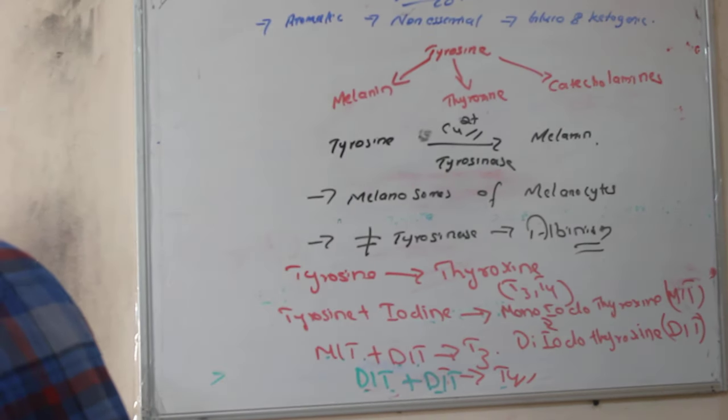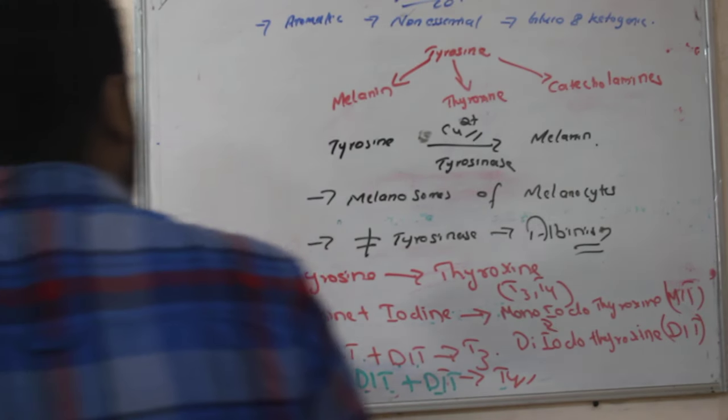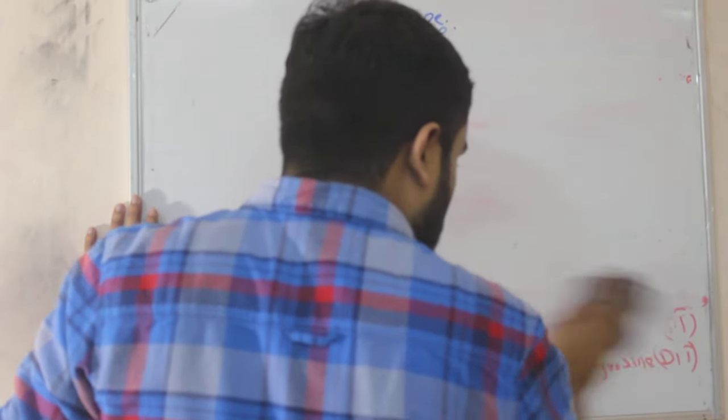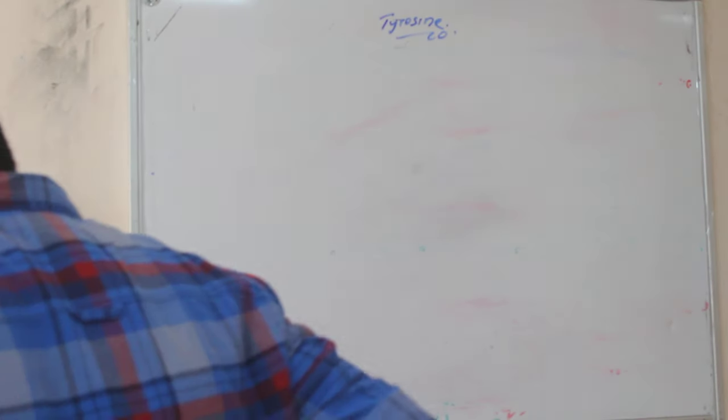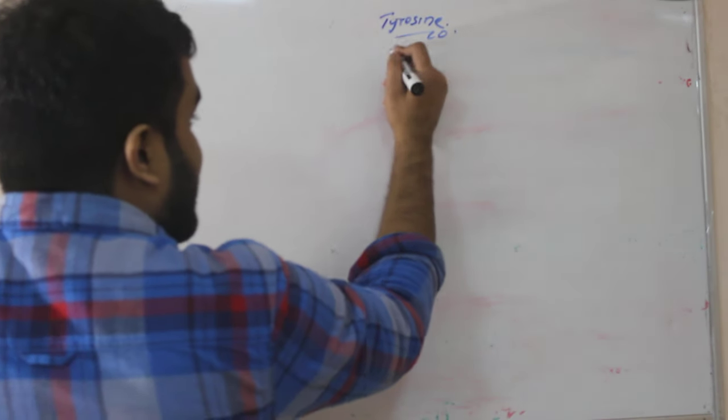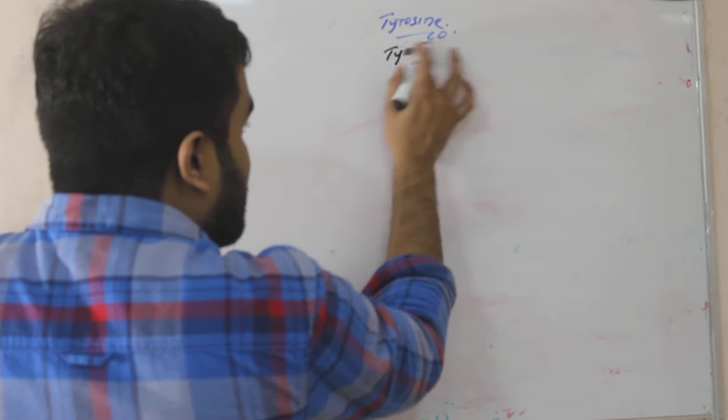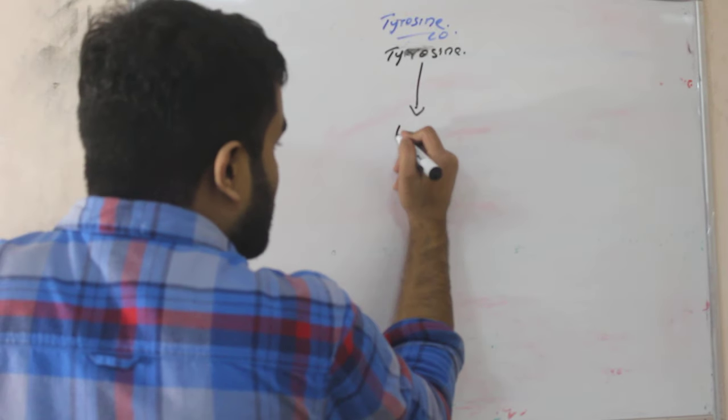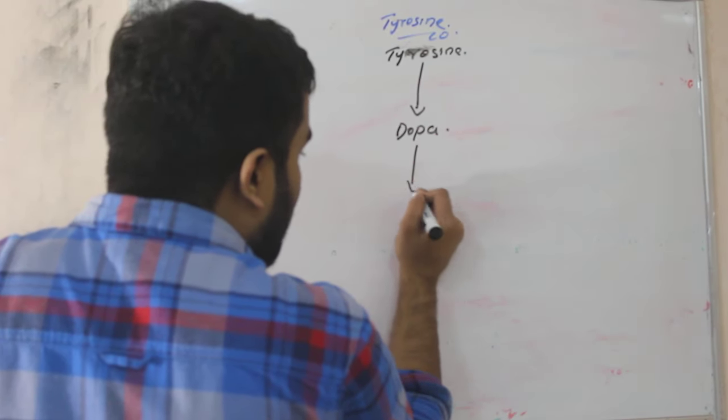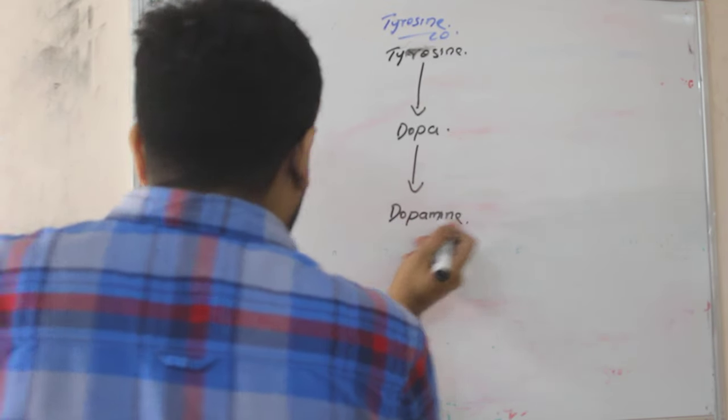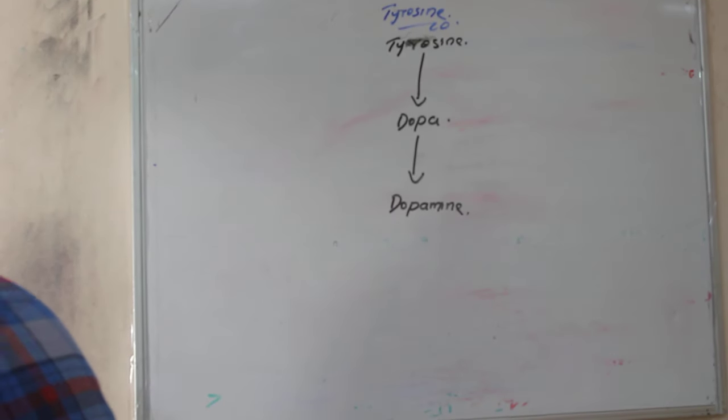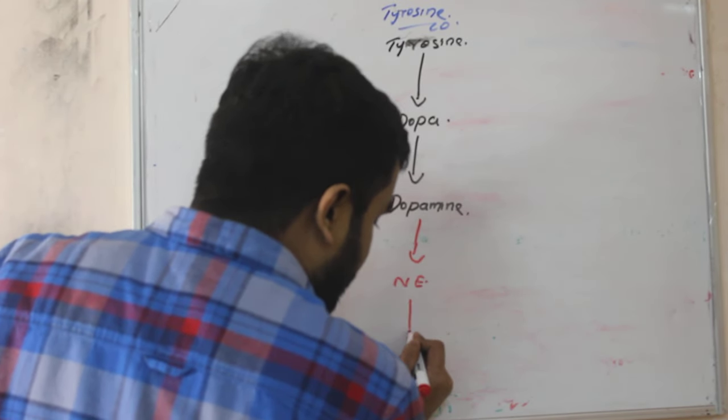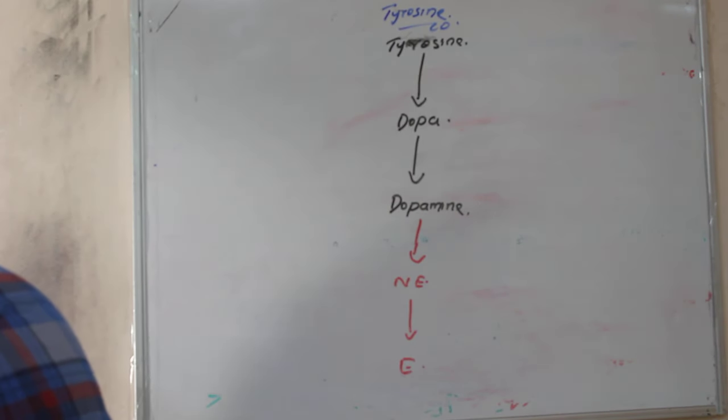Next we will see how the catecholamines are formed. Now we will study how the catecholamines are formed from tyrosine. Now the tyrosine will be converted to first DOPA. DOPA will become dopamine. Then this dopamine will be forming norepinephrine, then ultimately we will have epinephrine.